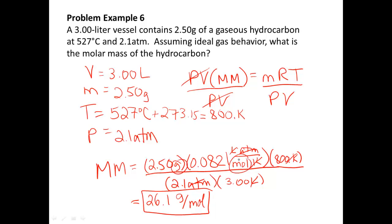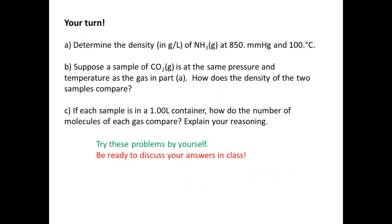So, our next problem is going to be the your turn. In part A, you're supposed to determine the density of ammonia gas at 850 millimeter mercury and 100 degrees Celsius.